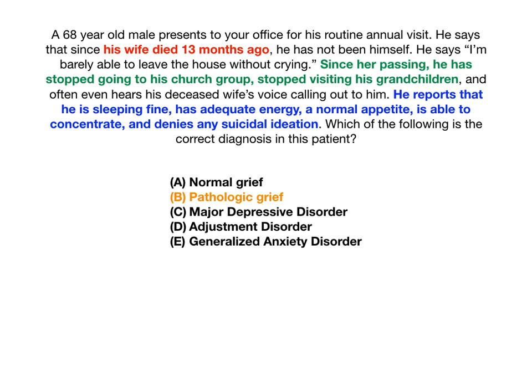The red text says that his wife died 13 months ago, and that's really important because in psychiatry, the timeline matters — how many months or weeks have passed since a stressor or symptom started is critical. In green, the question tells you that the patient stopped going to his church group and stopped visiting his grandchildren. This represents functional impairment. Normally, grief does not involve functional impairment in activities of daily living or normal routine.